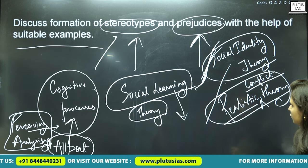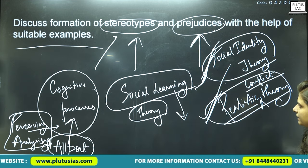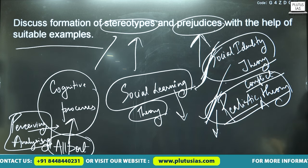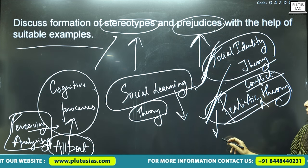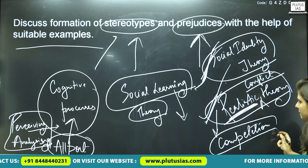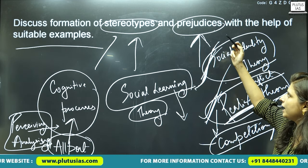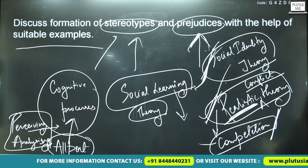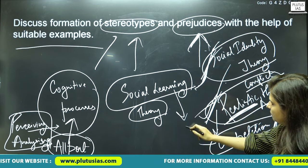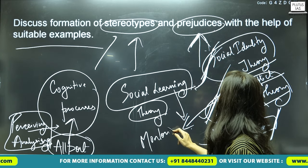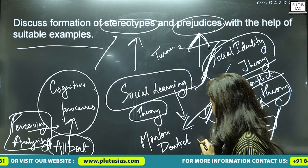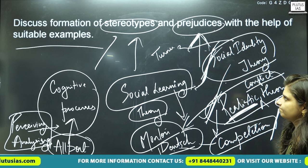In Realistic Conflict Theory — given by Muzafer Sherif — there is a lot of competition in the realistic world, and based on these competitive dynamics, you formulate your prejudices. Social Identity Theory was given by John Turner and Realistic Conflict Theory was given by Muzafer Sherif.